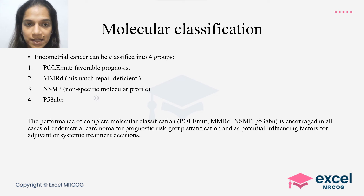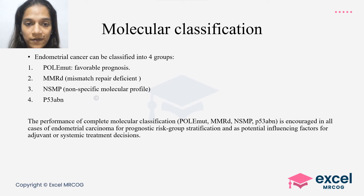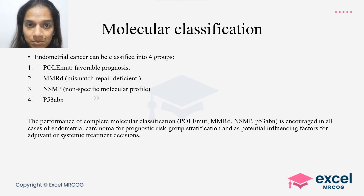Molecular classification of endometrial cancer, although not included in the staging itself, is recommended for stage 1 and 2 cancers as it would modify treatment and may modify staging if available. Endometrial cancer is classified into four molecular groups: POLE mutation (favorable prognosis), mismatch repair deficient, nonspecific molecular profile, and p53 abnormality. Complete molecular classification is encouraged in all cases for prognostic risk group stratification and as a potential influencing factor for adjuvant or systemic treatment decisions.